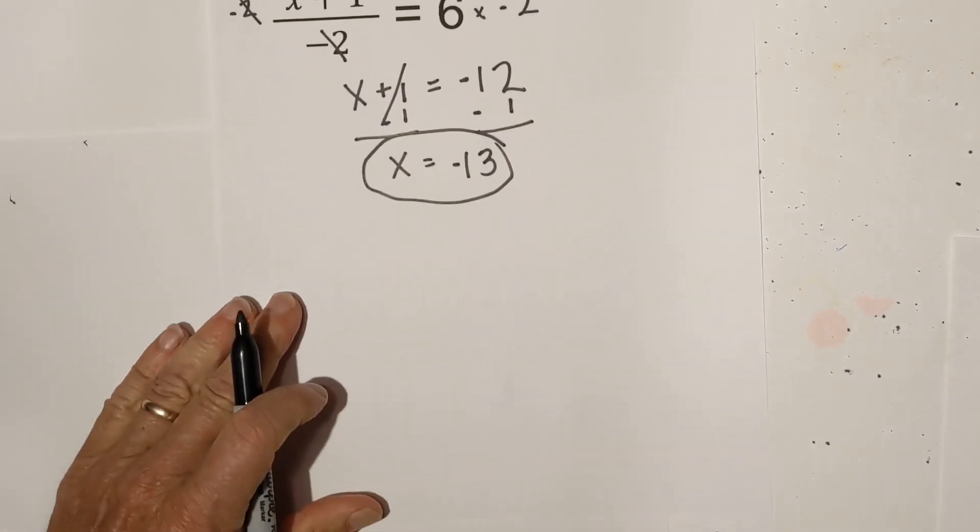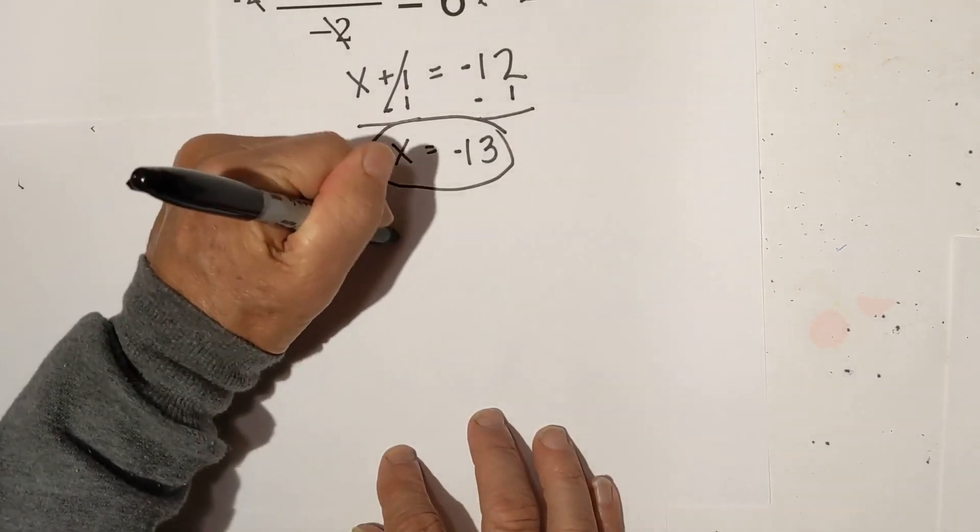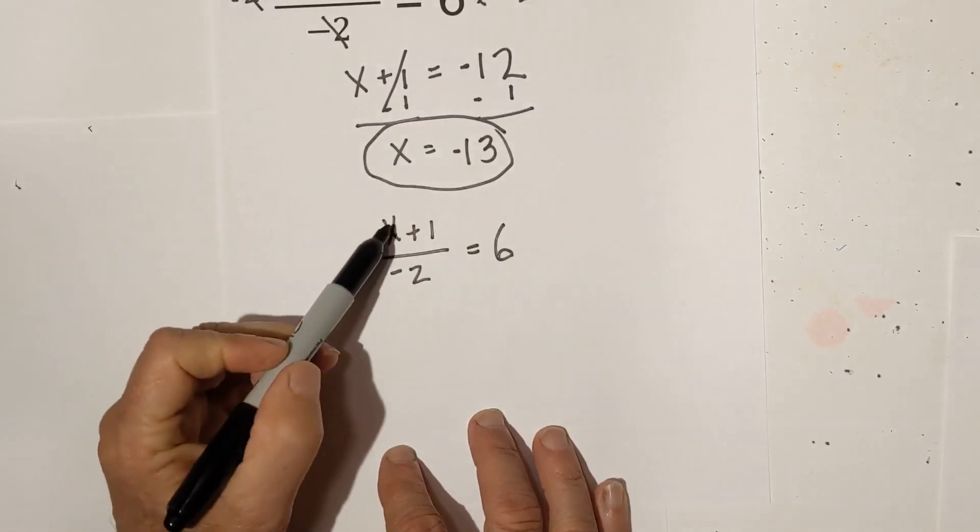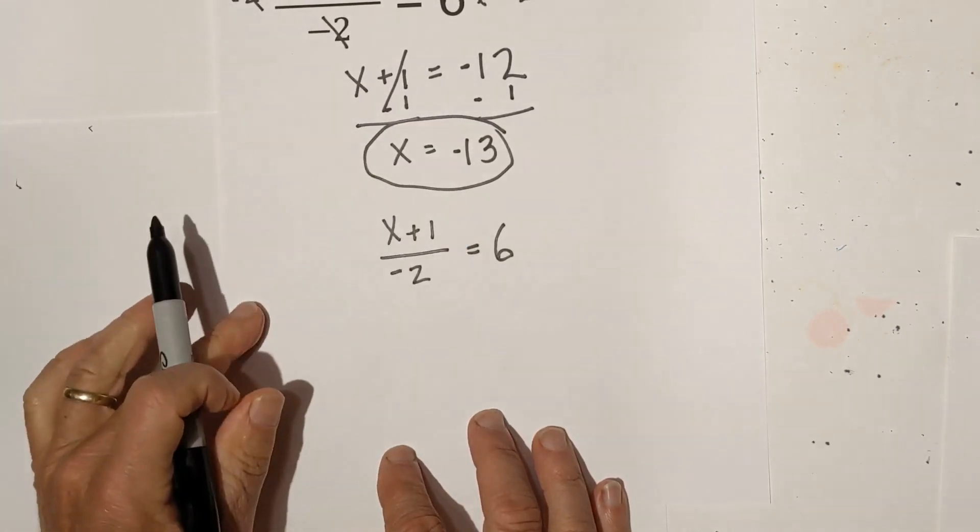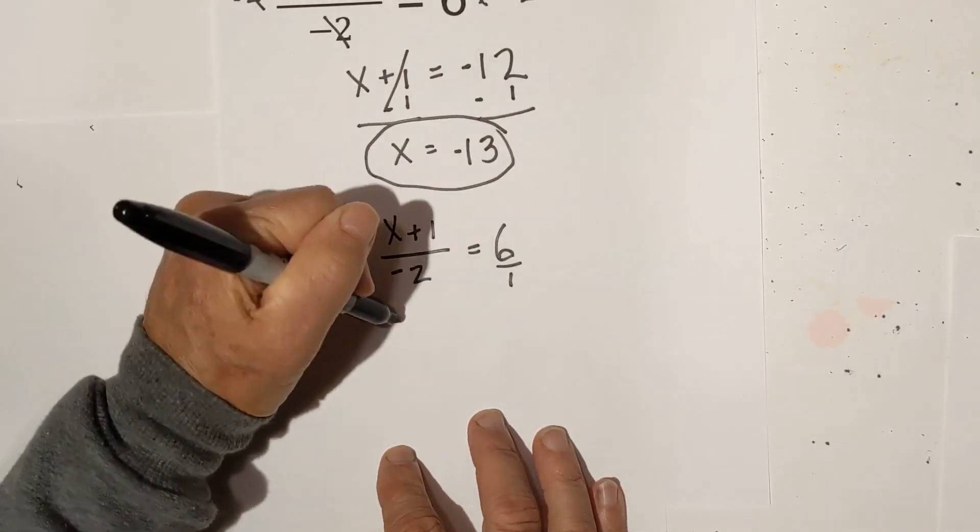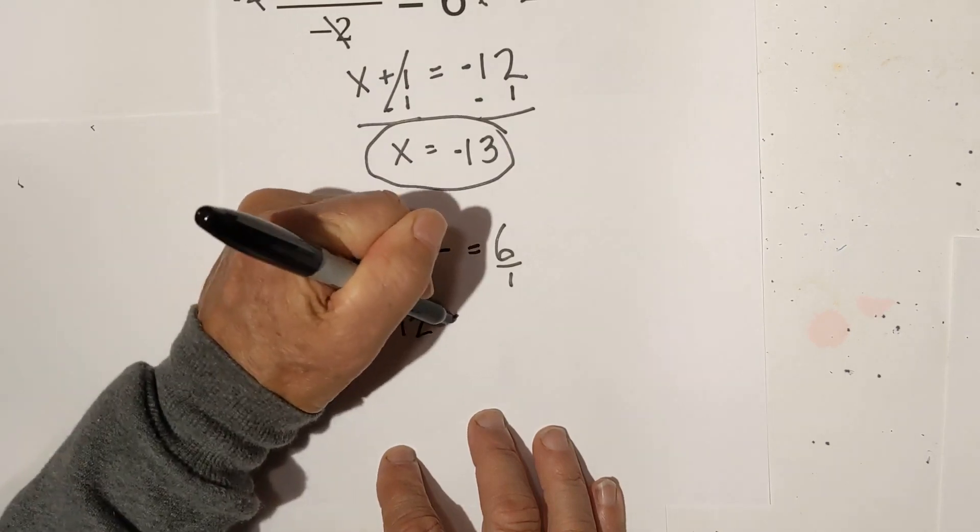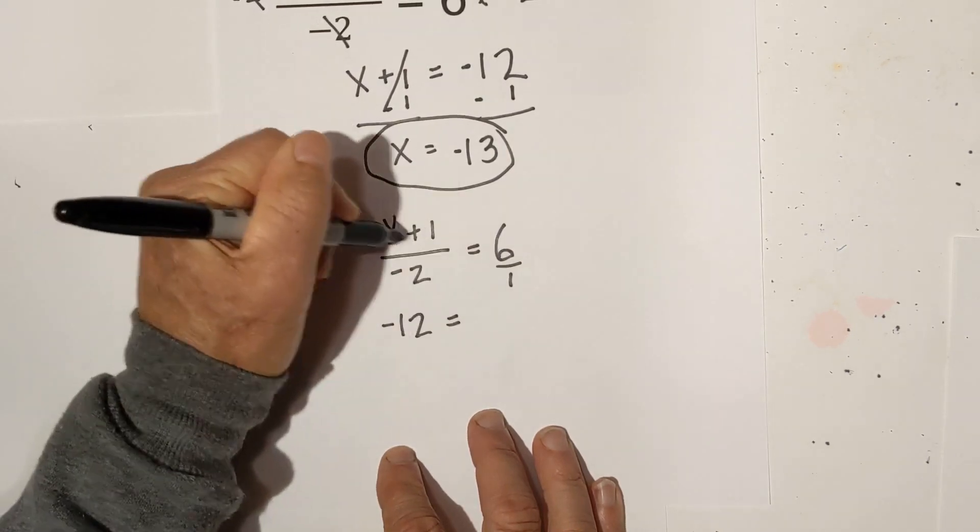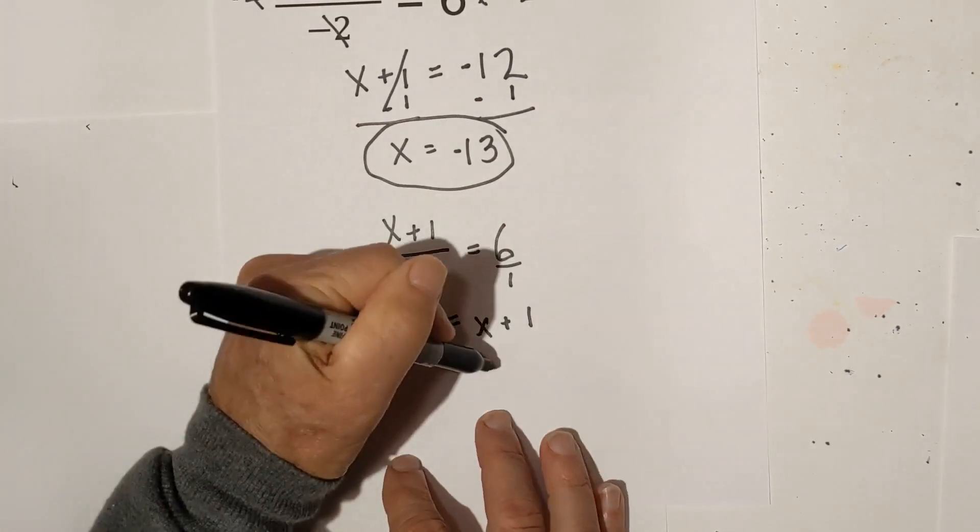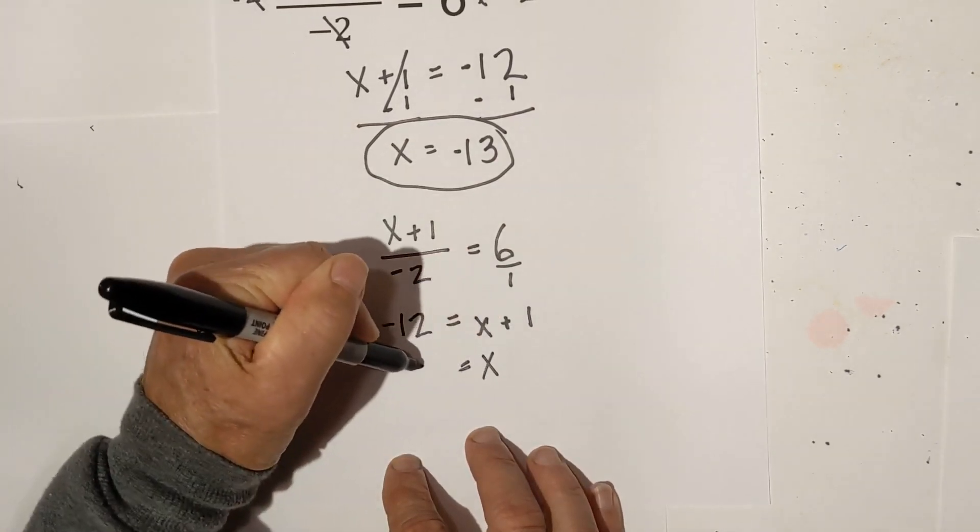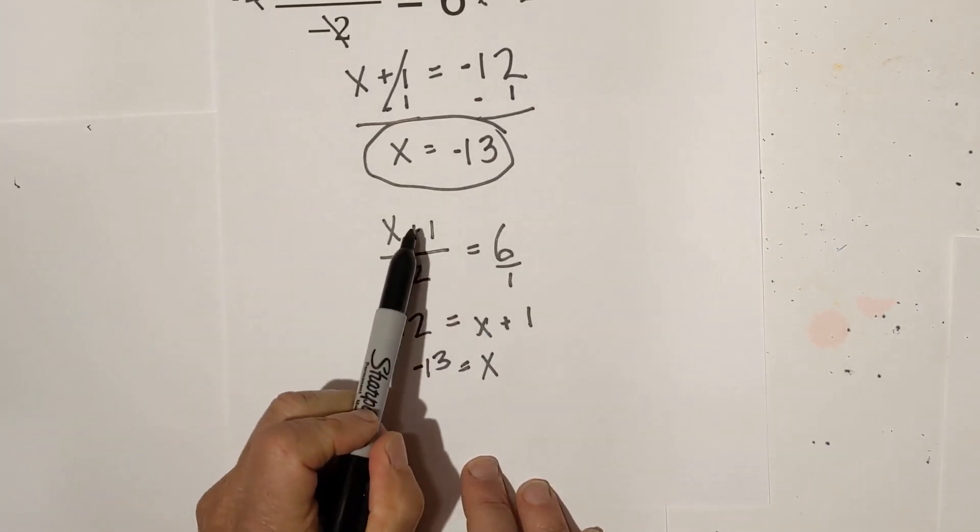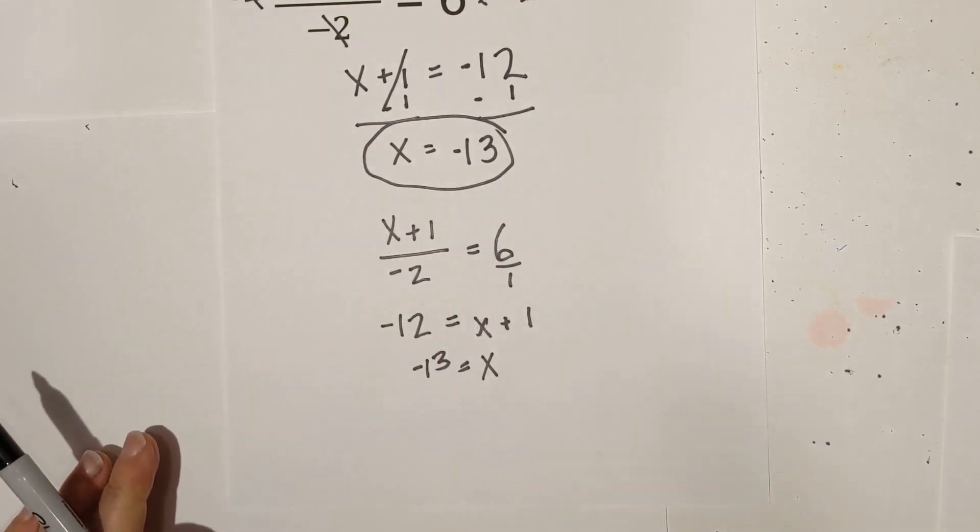Now real quickly, a little shortcut. If you have this, and you only have one fraction and one number on the other side, you can cross multiply if you would like. 6 times negative 2 is negative 12 equals x plus 1. 1 times 1 is 1. And then it becomes x is negative 13. That's a little bit quicker way if you would like. And remember again, you have to have one fraction and one number. Let's work one more example.